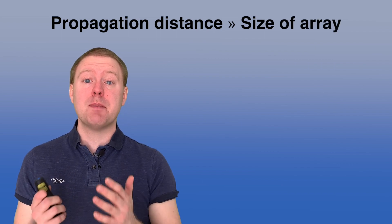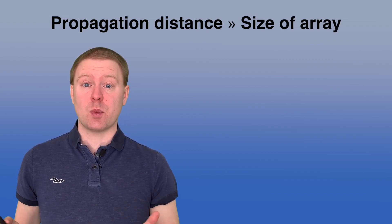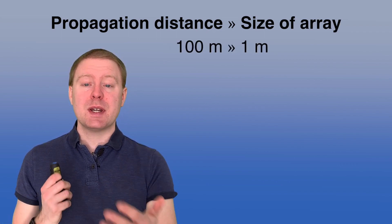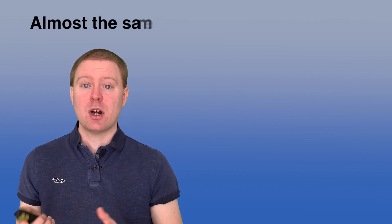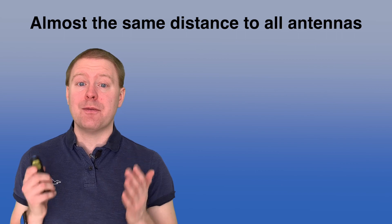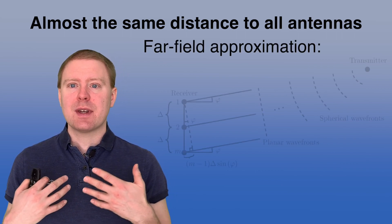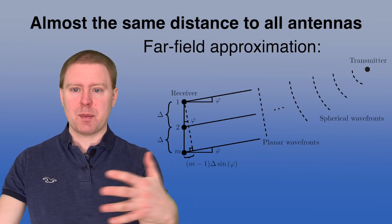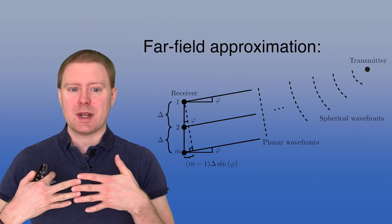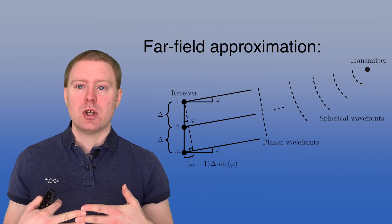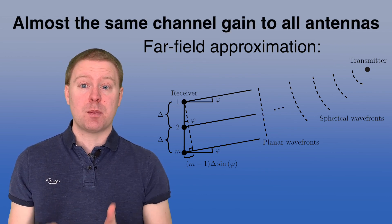Usually in wireless communication the distance between transmitter and receiver is much larger than the size of the array — perhaps 100 meters propagation distance but arrays smaller than a meter. When this happens, the distances from the transmitter to all receiver antennas are approximately the same. We say we are in the far field, and even though the transmitted wave propagates as a sphere, when it reaches the receiver it is almost like a planar wavefront, so the channel gain to each antenna is approximately the same.